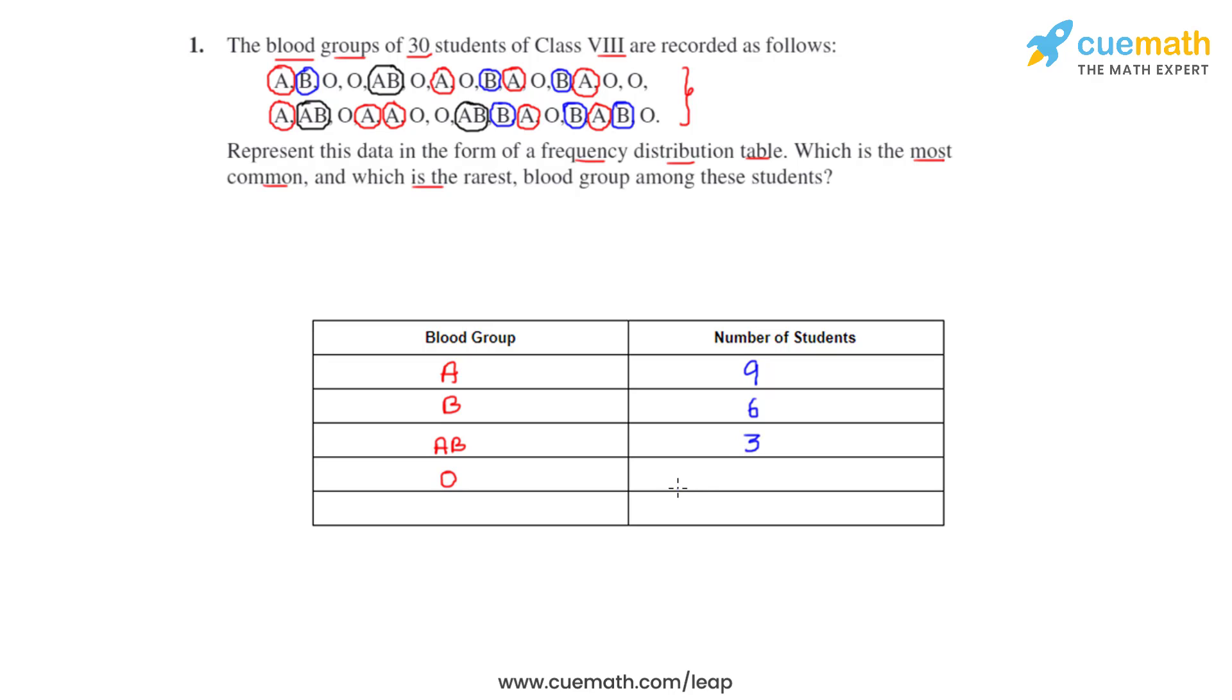Then we will be finding the number of students who have got blood group O. So there are a total of 12 students who have got blood group O.